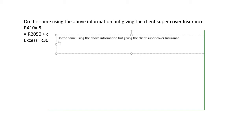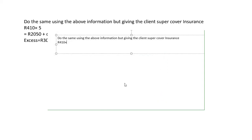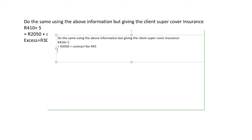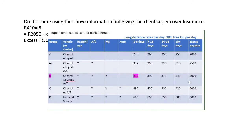So it's 410 multiplied by 5 and the answer is 2,050 rands. We have to add the contract fee of 45 rands. We also have to look at the excess — the excess amount is 3,000 rands.